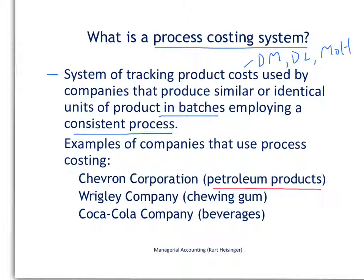Wrigley Company produces chewing gum — again, items that are produced in high volume and that are relatively low cost. And Coca-Cola Company produces beverages, which would certainly fall into that category as well.